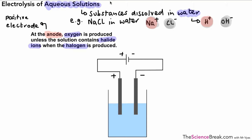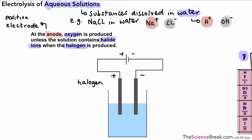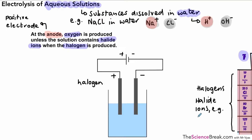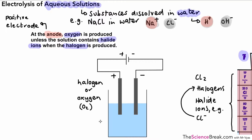Let's add a note to our diagram. We're going to get the halogen produced. The halogens are found in group seven of the periodic table, and when they produce ions they produce halide ions. The halide ions are ions from these halogens — for example, Cl⁻ is a halide ion and it would produce the halogen chlorine (Cl₂). So the halide ion is Cl⁻ and the halogen is Cl₂. In summary: we get the halogen at the anode, or oxygen if the halogen is not present, and that comes from the hydroxide ions in the water.